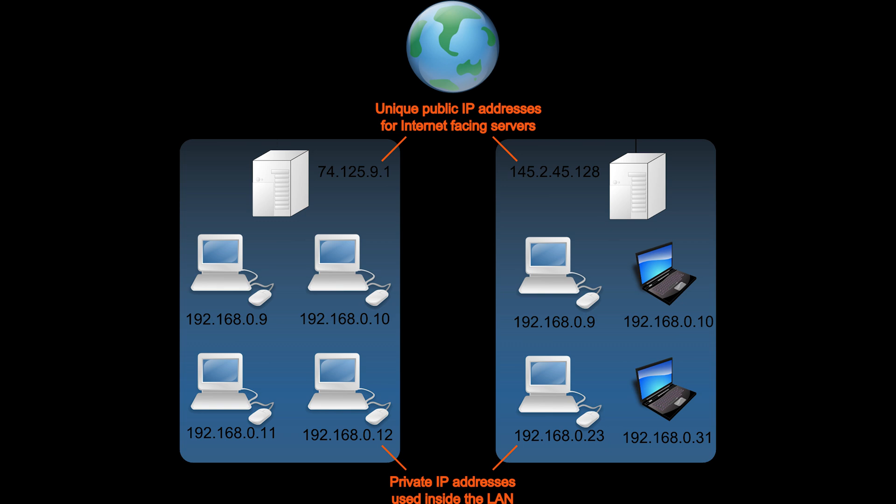Hosts on a network communicate by using TCP/IP, meaning that they must have unique addresses. It is basically a number that defines the logical network that each host belongs to and the host's address on that network. On a private network this is not a difficult task, but on a network on the scale of the internet, addressing can get complex.